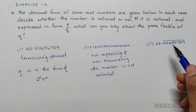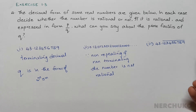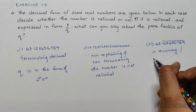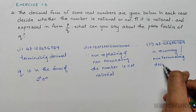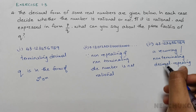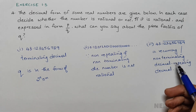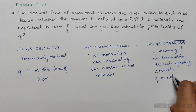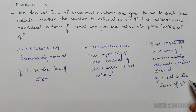For the third part, we have 43.123456789 with a bar on top, which means it is a recurring decimal — a non-terminating repeating decimal — and this is a rational number. Since this is a non-terminating repeating decimal, we can see that Q is not in the form of 2 power n and 5 power m.